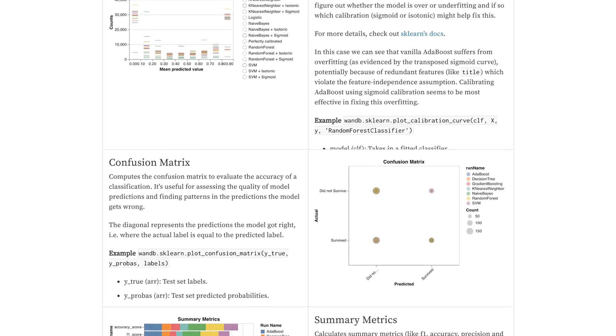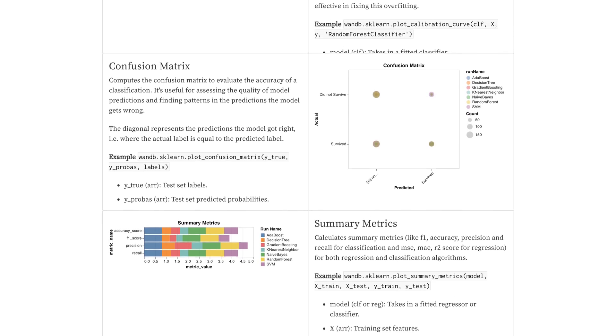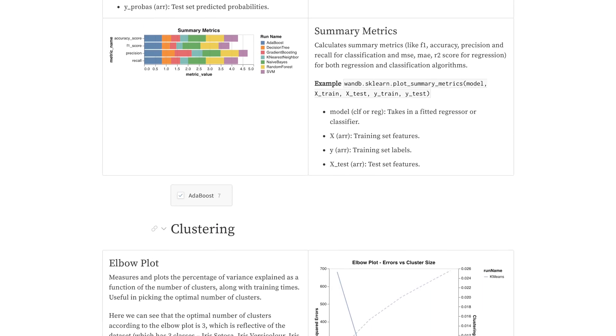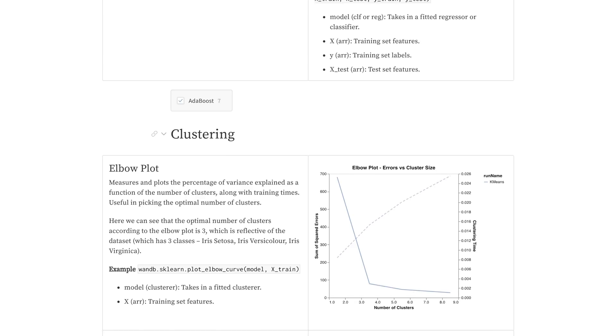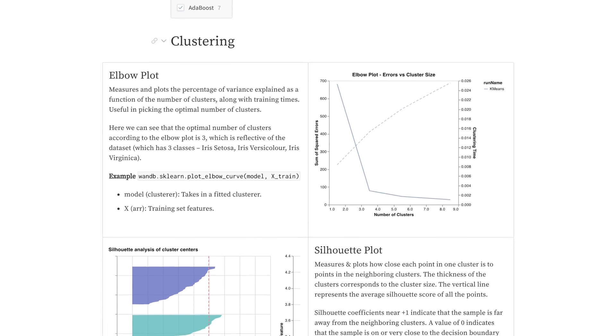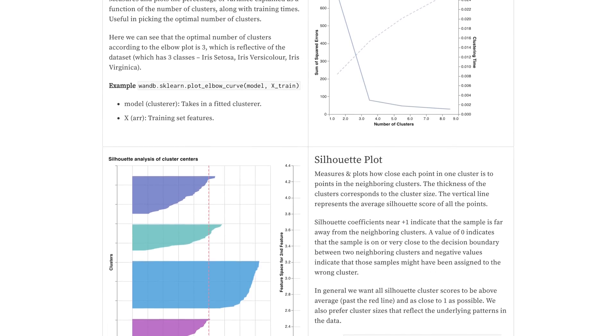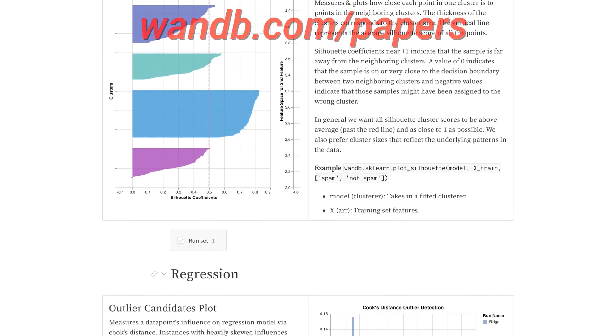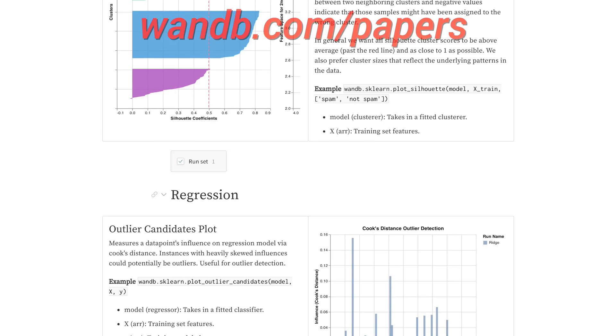And that's exactly how Weights and Biases helps you by organizing your experiments. It is used by more than 200 companies and research institutions, including OpenAI, Toyota Research, GitHub, and more. And get this, Weights and Biases is free for all individuals, academics, and open source projects!